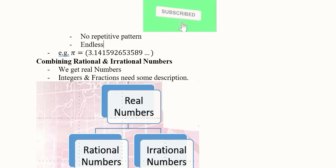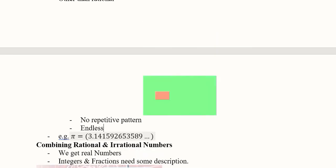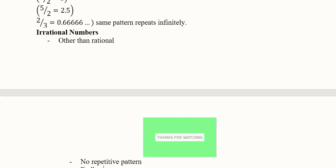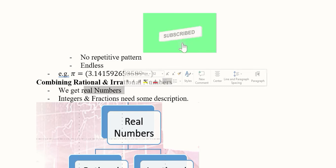No repetitive pattern will be there and they will be endless. As you can see, the pattern is not repetitive: 1, 4, 1, 5, 9, 2, 6, 5, 3, 5, 8, 9. The same numbers are not reoccurring the way it was happening in rational numbers. In this irrational number pi, we have the value 22 over 7. We can combine these to get the real numbers: rational and irrational.